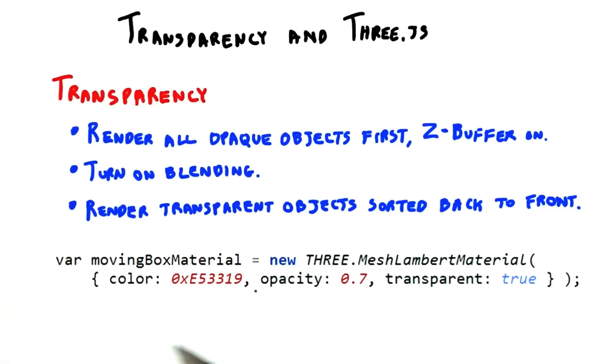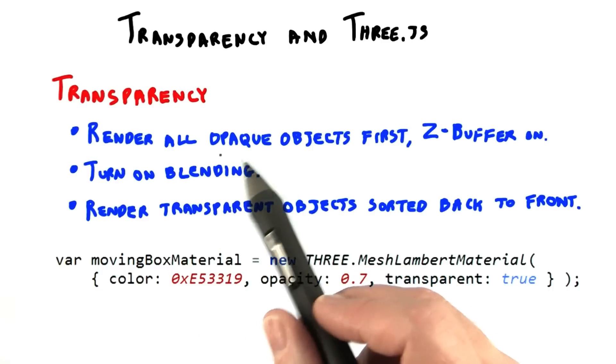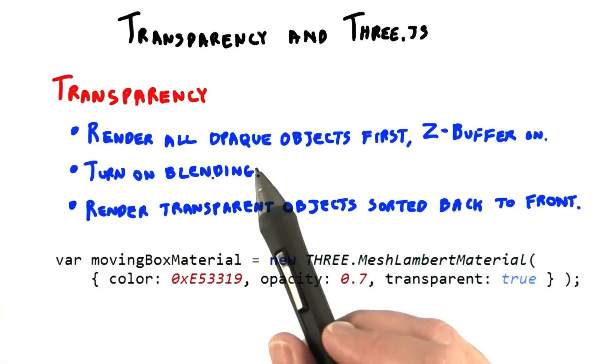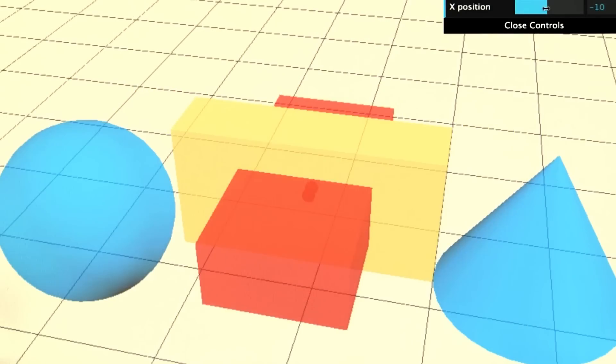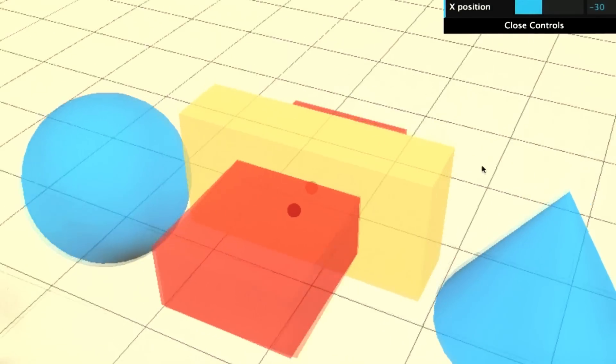This transparency scheme usually works fairly well in practice, but there are still quite a few problem cases. One problem is interpenetration.